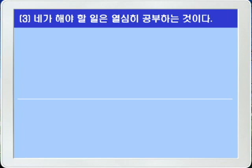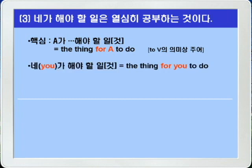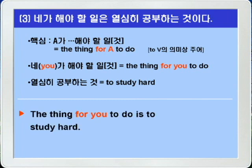3번. 당신이 내가 해야 할 일은 열심히 공부하는 것이다. A가 뭐뭐 해야 할 일은 'the thing for A to do'입니다. 당신이 해야 할 일이니까 for you를 쓰면 됩니다. 열심히 공부하는 것은 to study hard입니다. 정답: 'The thing for you to do is to study hard.'